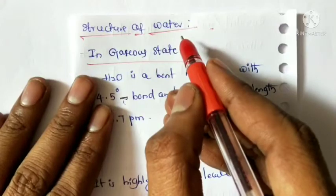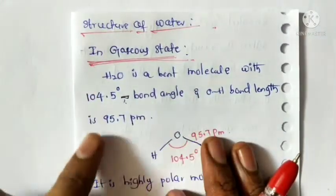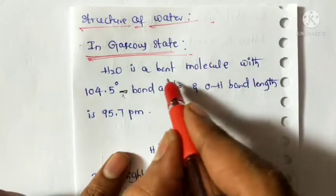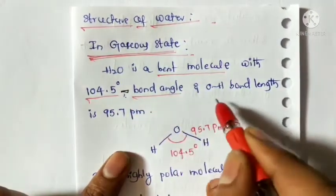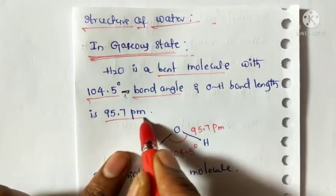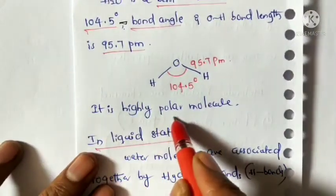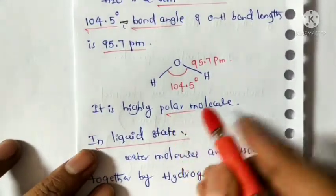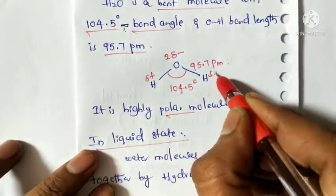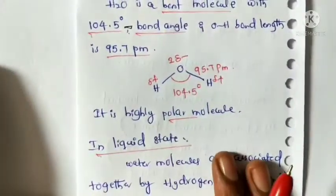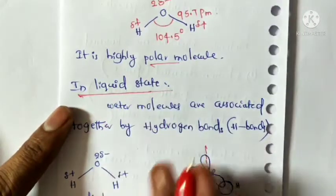Now let us look at the structure of water. In the gaseous state, water is a bent molecule with a bond angle of 104.5 degrees and an O–H bond length of 95.7 picometers. It is a highly polar molecule, with partial negative charge on oxygen and partial positive charges on the hydrogens.